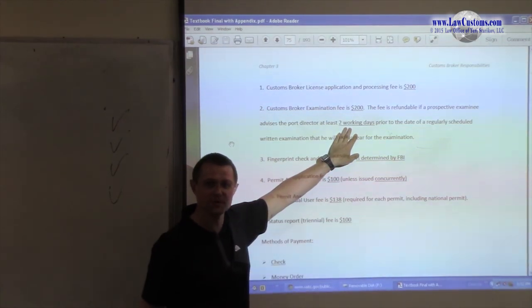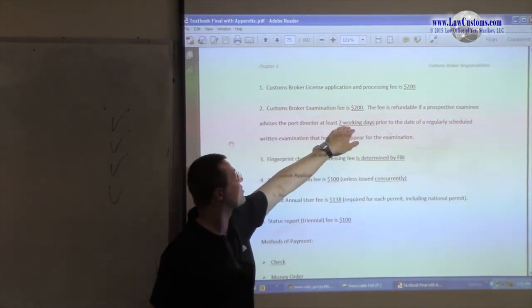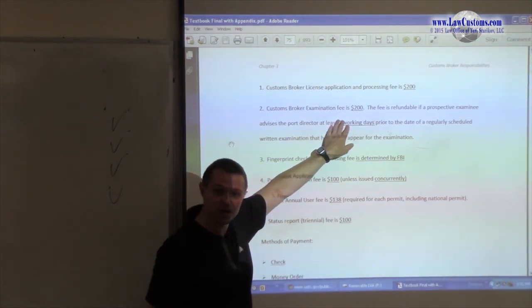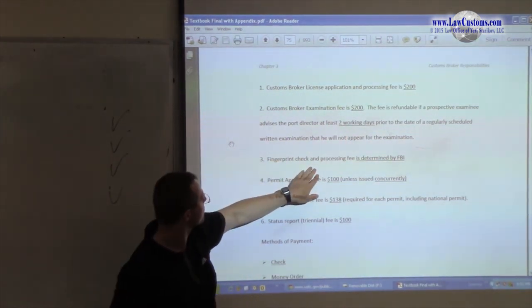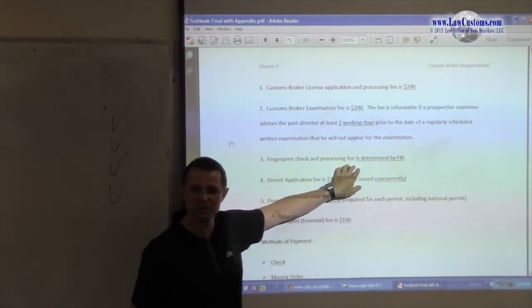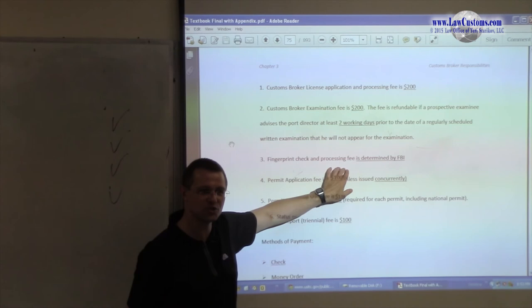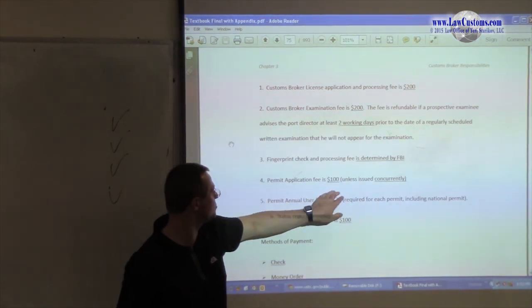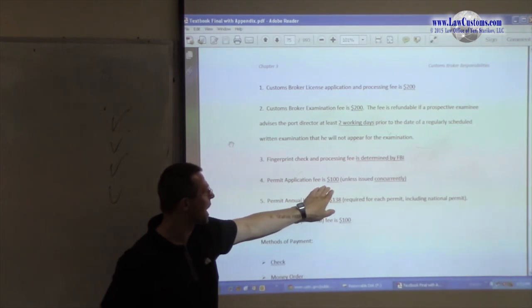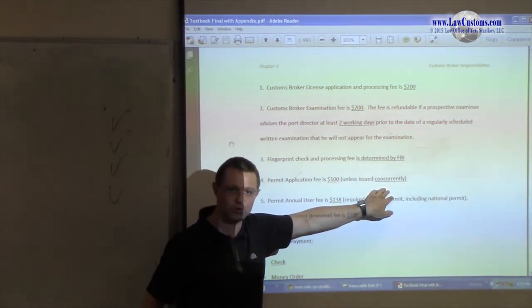So that's why I encourage everyone to register. Because if something happens, let's say you have a family emergency, you can get a refund. For the license, you cannot get a refund. For the exam, you can. Fingerprint. What is it? Like $36, I believe. I haven't checked the rates lately. It's done by FBI. Permit application, $100 unless issued concurrently.